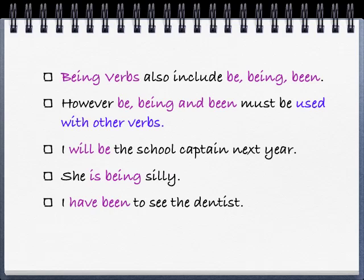Being verbs also include be, being, and been. However, with be, being, and been, these words must be used with other verbs. I will be the school captain next year — be is used with will to form the verb. She is being silly — is being is the verb. I have been to the dentist — have been is the verb.